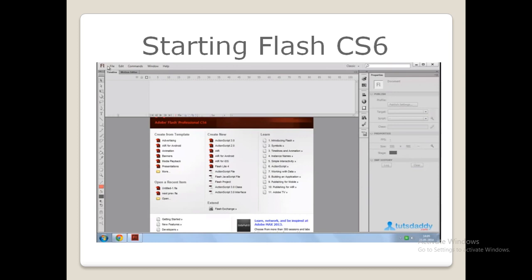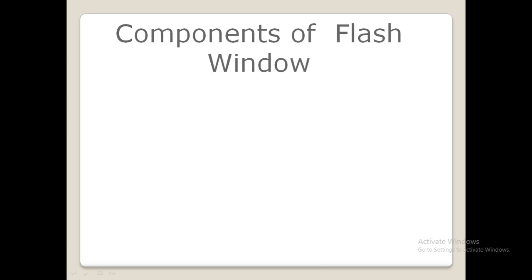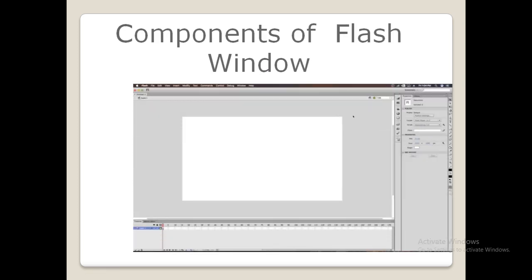Next, under the Create New pane, select ActionScript 3.0. A new Flash window will appear and you can see all the major operations are performed on this screen. The default file extension of a Flash file is .fla. Students, you must be aware that the file extension of a Flash file is .fla.